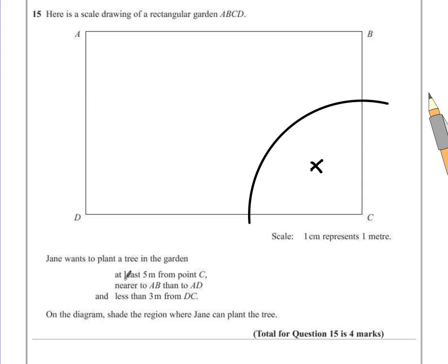So what about the next rule? It must be closer to AB than AD. Well AB and AD both meet at this angle. So if we're wanting to find something that's closer to one line than the other, we need to know where the halfway point is. That halfway point will show us which half is closer to each line.